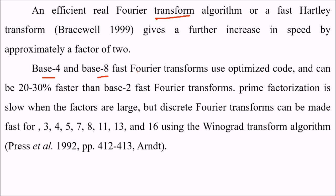Base-4 and base-8 fast Fourier transforms use optimized code and can be 20 to 30 percent faster than base-2 fast Fourier transforms.